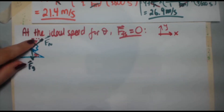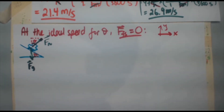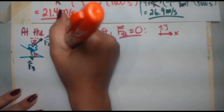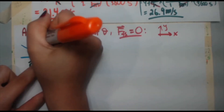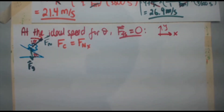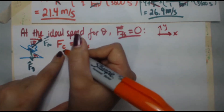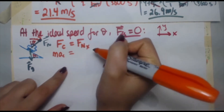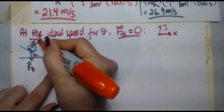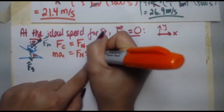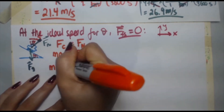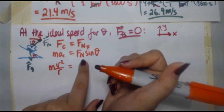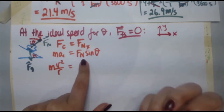The centripetal force is given by FNx, since that's the component pointing toward the center of the circular motion. So F_centripetal = FNx. Using Newton's second law: m × a_centripetal = FN sinθ, and a_centripetal = v²/r, so FN sinθ = mv²/r.